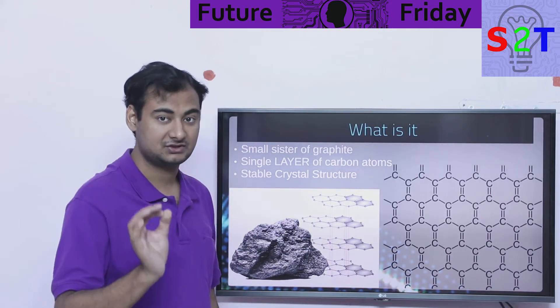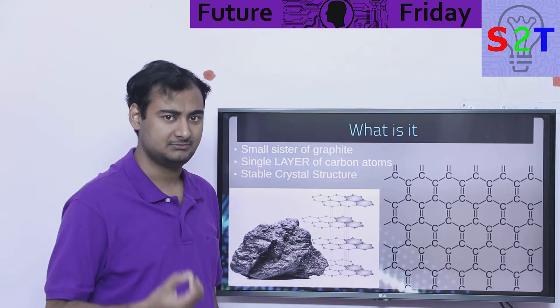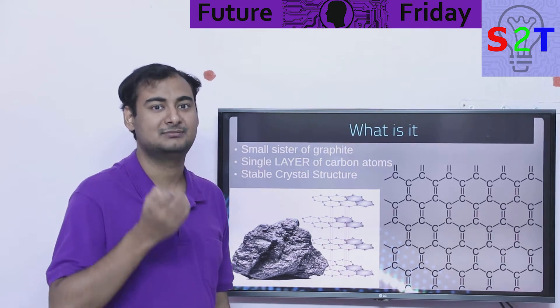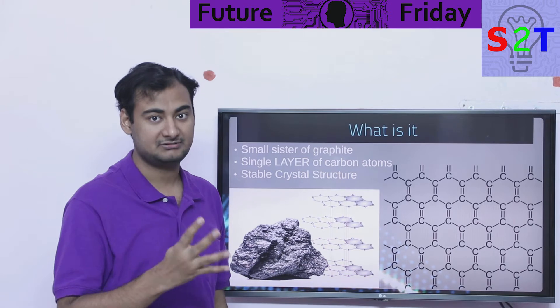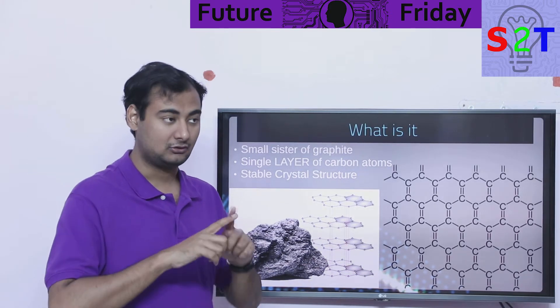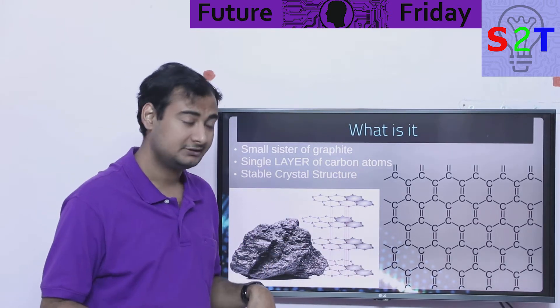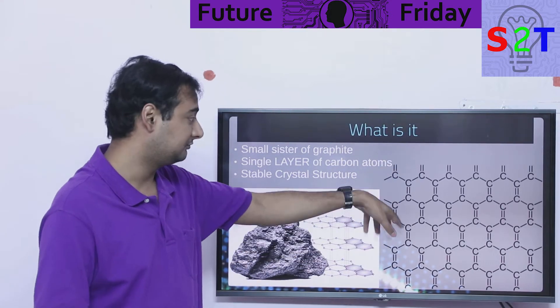So it's a stable crystal structure. Now, how is it stable? If you are familiar with carbon, you know carbon needs four bonds to become stable. That's why diamond is so strong — it has all the bonding it needs, already done with itself. Same goes for graphene.